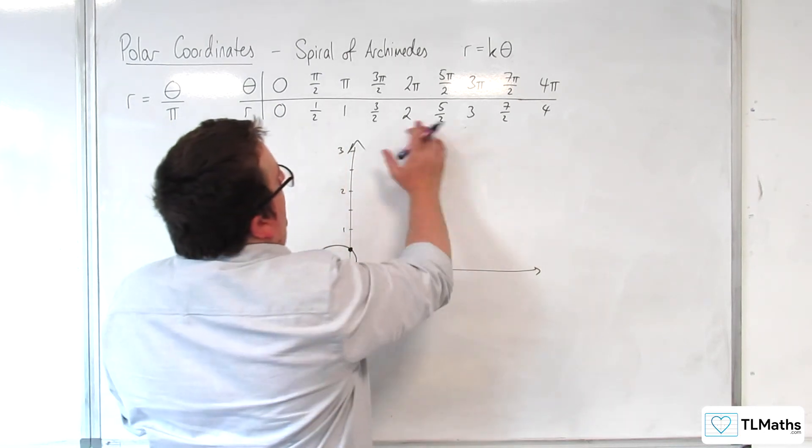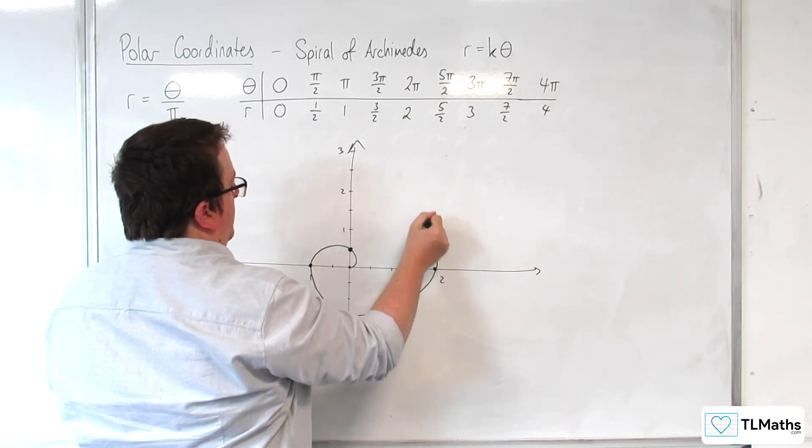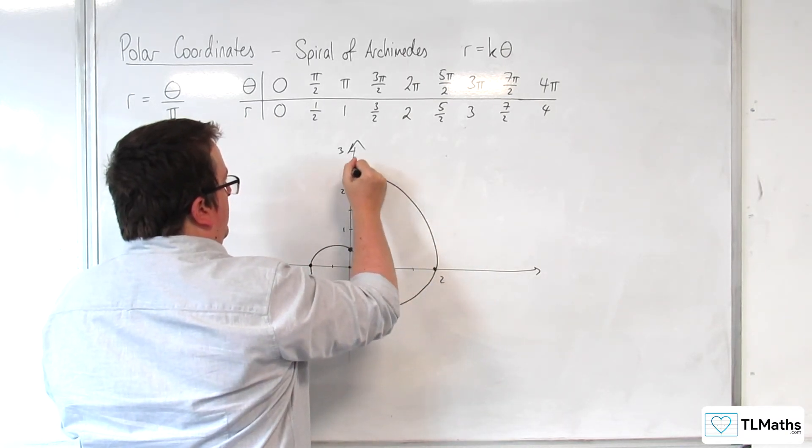And then when theta is 5 pi over 2, we're at 5 halves. So, there.